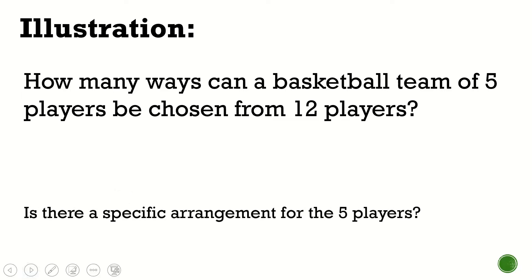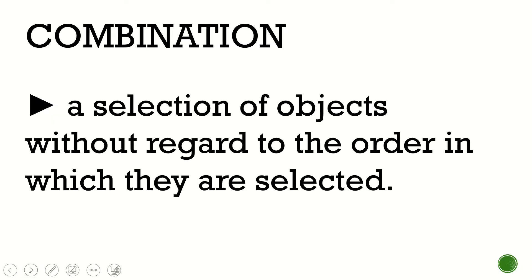Now, is there a specific arrangement for those five players? Well, if the answer is no, then that means we're talking about combination. Now let me give you the definition of combination. Combination is a selection of objects without regard to the order in which they are selected. This is totally different from another lesson I already discussed, and that's permutation.